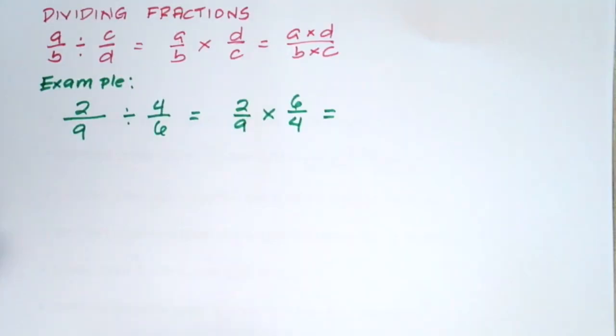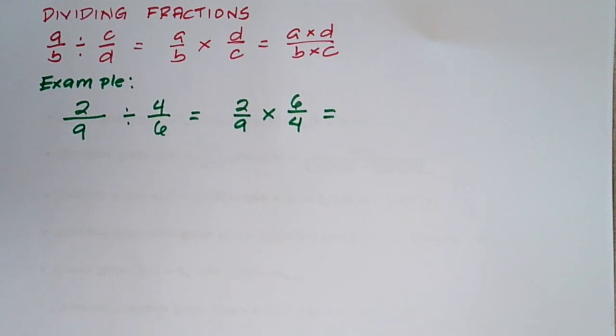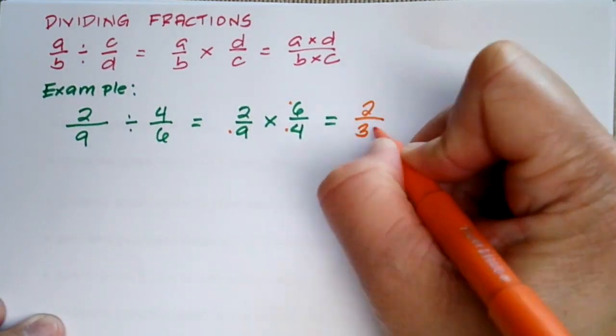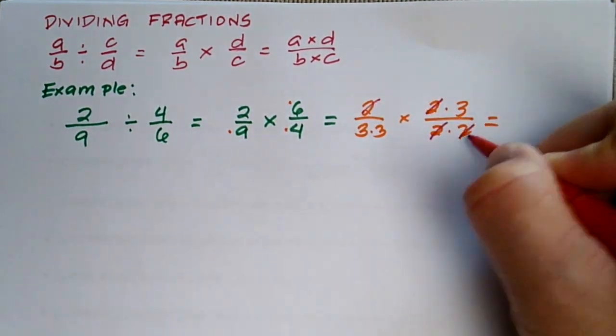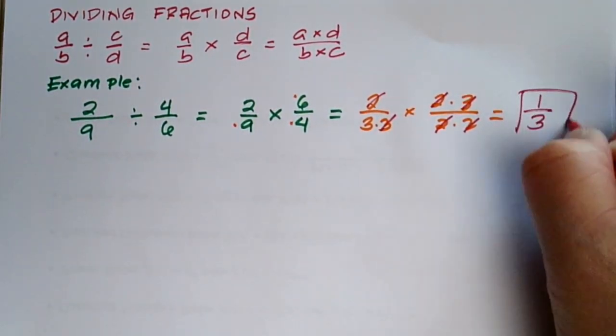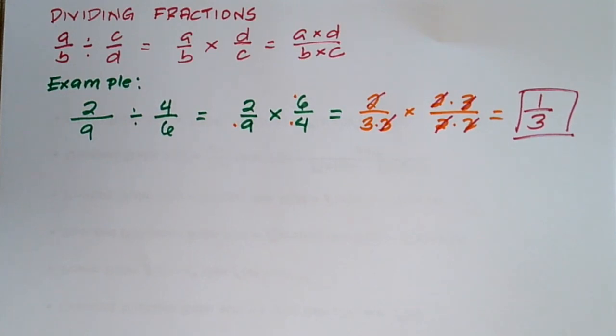Now by factoring all our composite numbers, we'll be able to modify our fractions and cancel all common terms and whatever is left over is going to be the quotient of our two fractions.